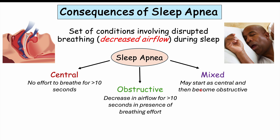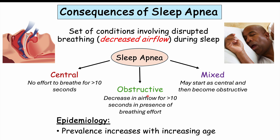Each of these types of sleep apnea has different risk factors. Central sleep apnea is often related to either certain medication use or brain injuries like a stroke. Obstructive sleep apnea is often related to things like obesity. The prevalence of all types increases with increasing age.